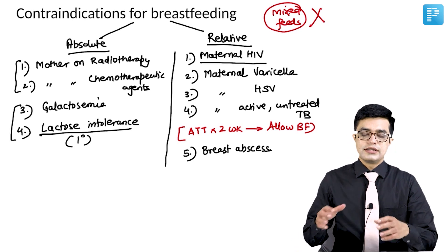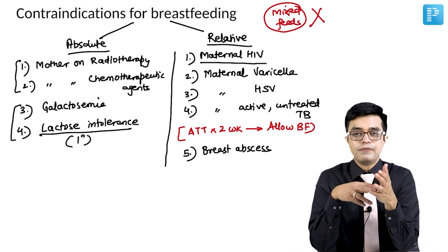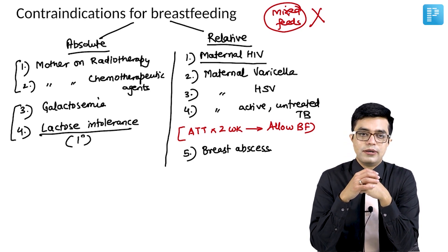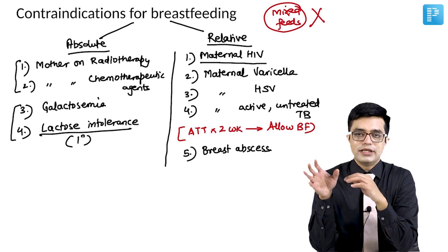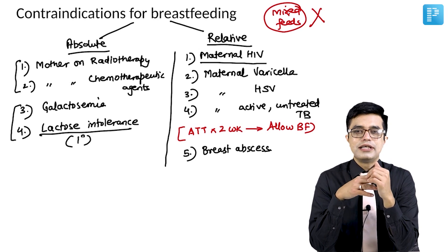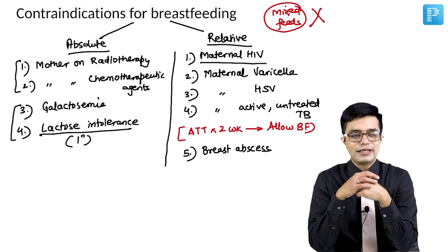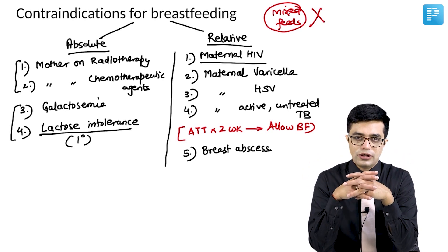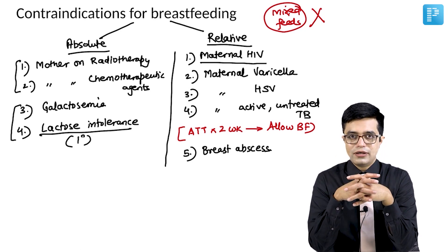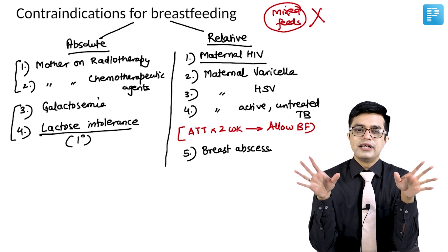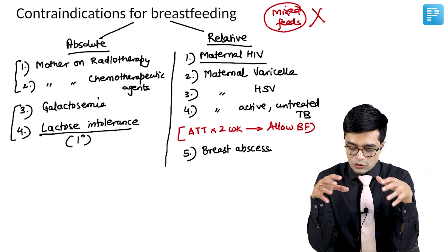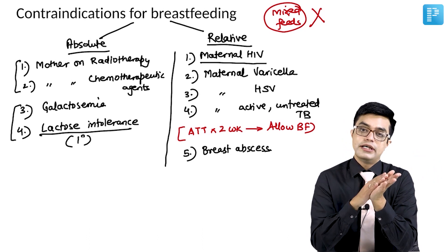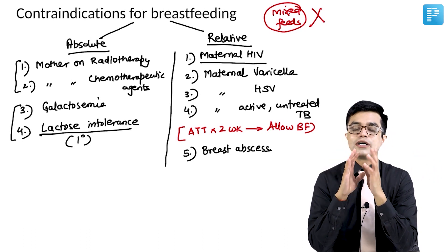Many types of MCQs are asked here. A common question asks which of the following is a contraindication for breastfeeding, and they simply mention 'mother with tuberculosis.' You have to look at the other options. If the mother simply has tuberculosis, it is implied she is a diagnosed case and must be on ATT — you do not diagnose a patient and leave it untreated. So you would not consider it a contraindication unless the other options give you no leeway. But if the question says 'active untreated tuberculosis,' there you cannot allow breastfeeding — it must be considered a contraindication.